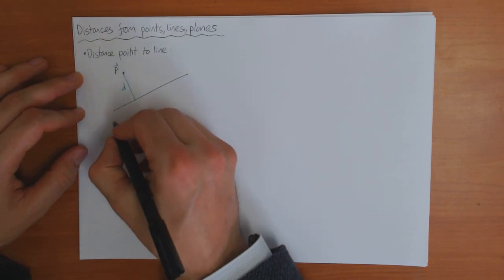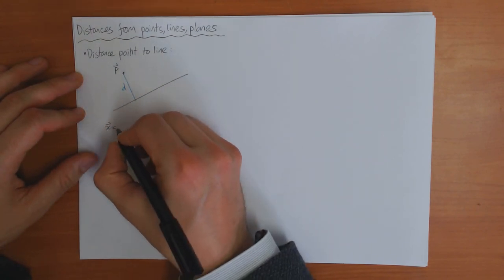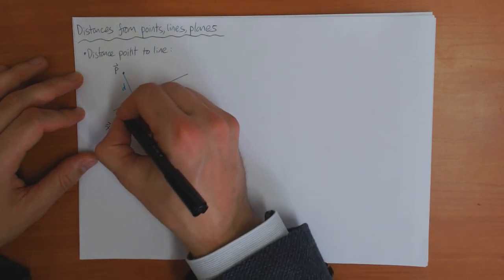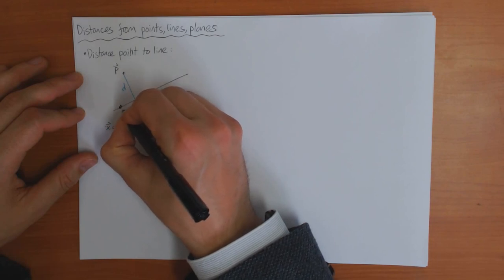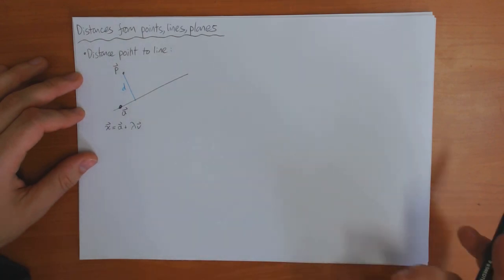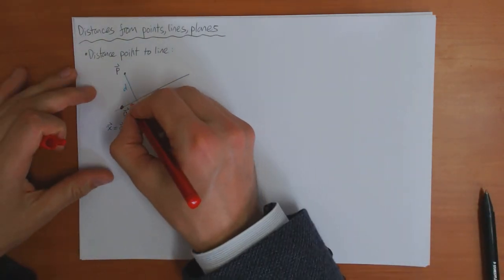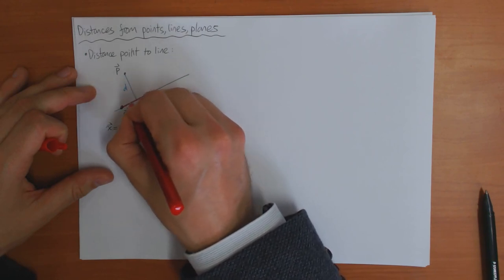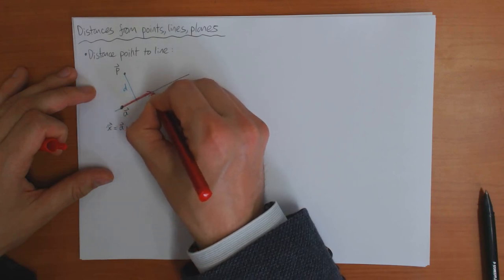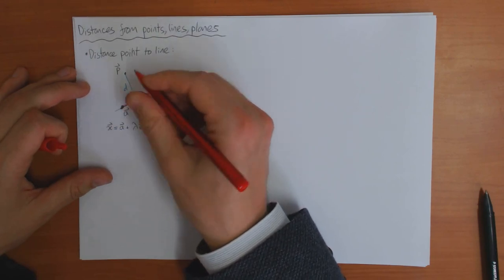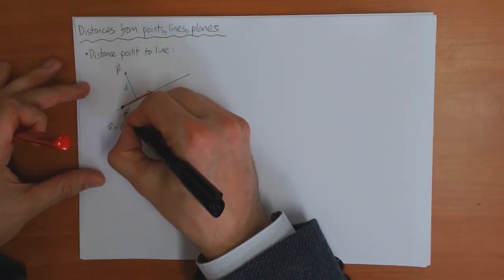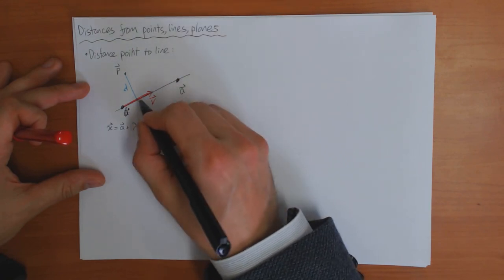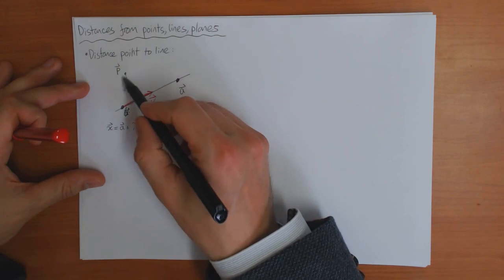We can do this using our equation for a line. We know that the line is defined by x = a + λb, so we have some point on the line A and a vector along the line B. I'm going to move A over here to make the picture easier to draw. So A is here, B is there, and P is there — how can I compute this distance?